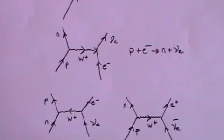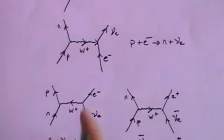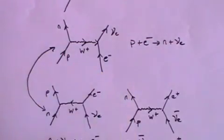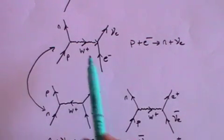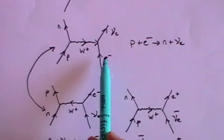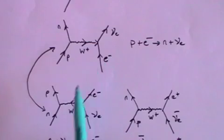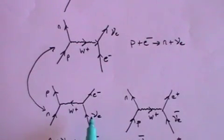And finally, just to demonstrate that anything that can happen does happen, you will observe that those two Feynman diagrams are simply the flip side of each other. Here, a proton and an electron produces a neutron and a neutrino. Here, a neutron and a neutrino produces a proton and an electron. If it can happen, it does happen.